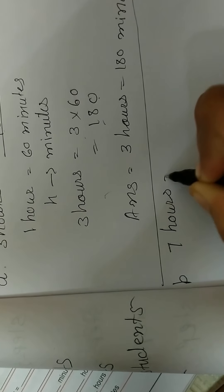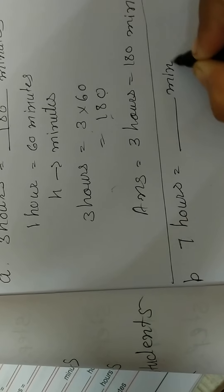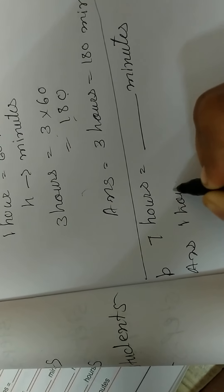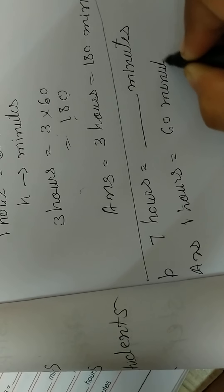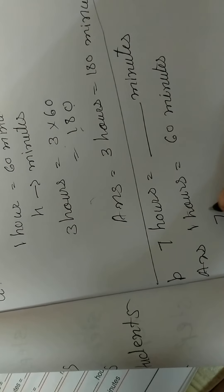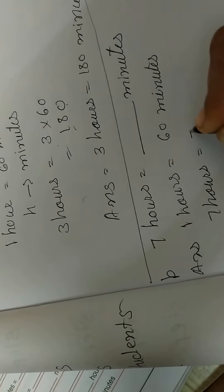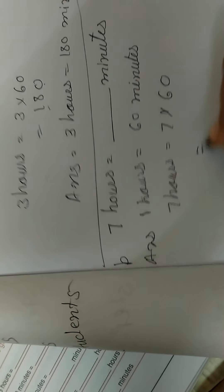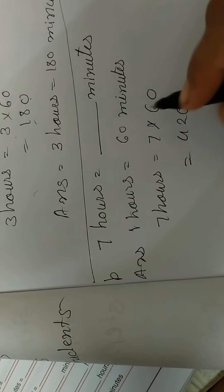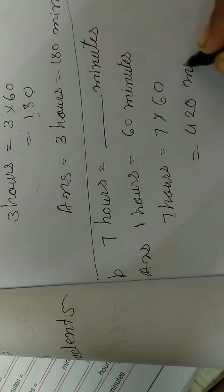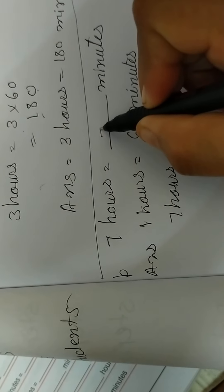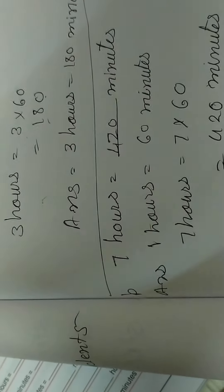Next problem B: 7 hours is equal to how many minutes? We have to write the answer. 1 hour is equal to 60 minutes, so 7 hours is equal to 7 into 60, which is equal to 420 minutes.